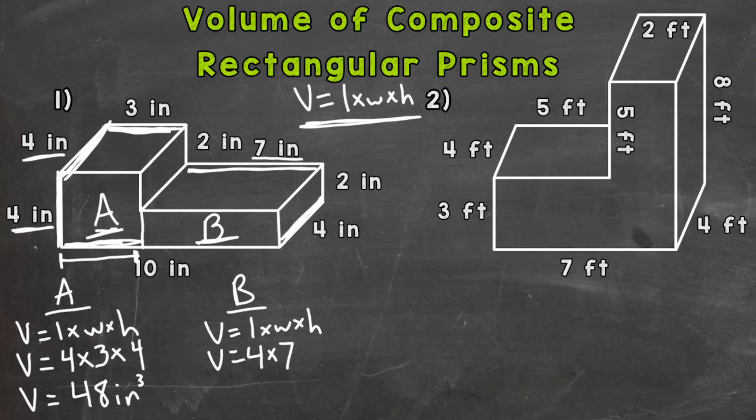And then the height, well, B isn't this full four inches that we use for A. It's a little bit shorter. So let's look back here. And this two inches is our height for B. So four times seven is 28. Times two is 56. And that's cubic inches.